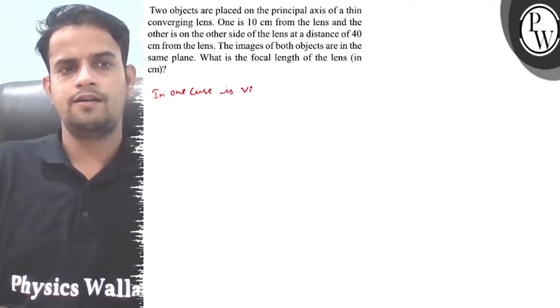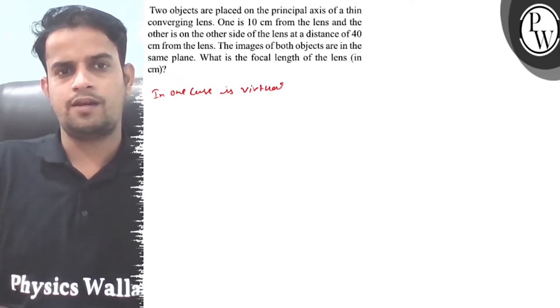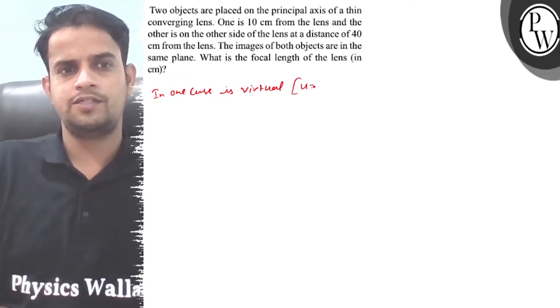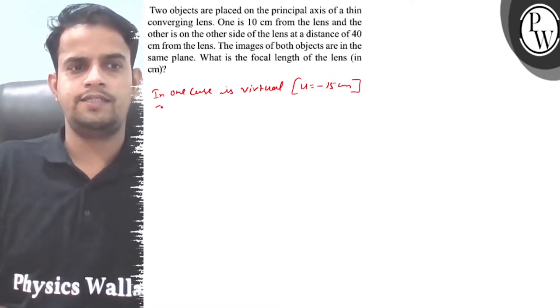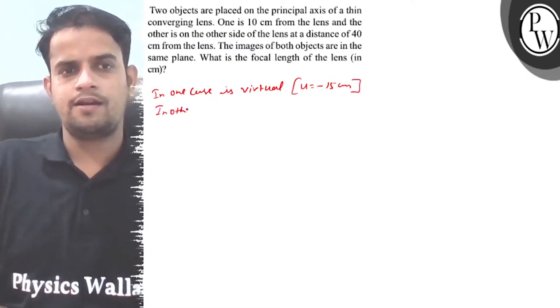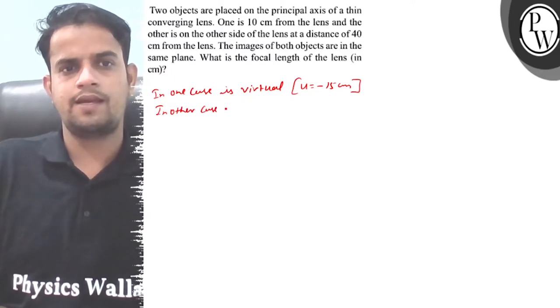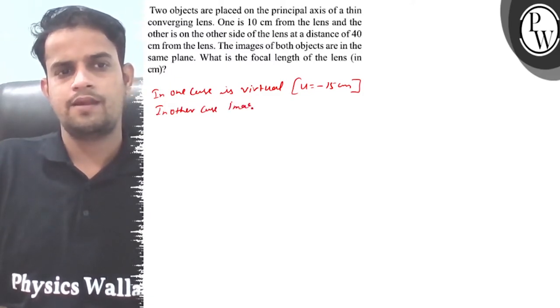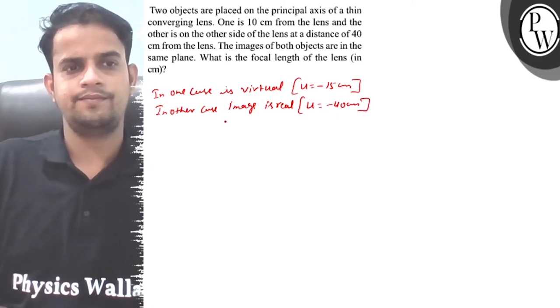In one case, the image is virtual. This situation where u equals to minus 10 centimeter. In the other case, image is real. This situation where u equals to minus 40 centimeter. And v equals to the same value.